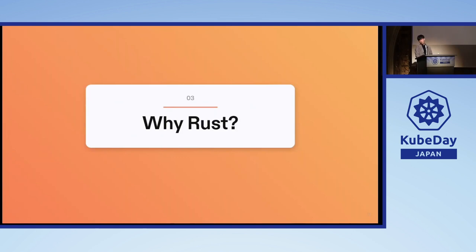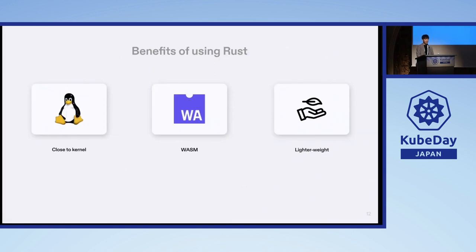Let's go into the reasons for implementing Yoki in Rust. I would like to talk about three advantages in detail. First, the most straightforward is a good match with the Linux kernel. More precisely, it needs to manipulate processes in detail. As Rust has been adopted as the second language of the Linux kernel, it has less difficulty using kernel features. It will not be difficult to handle system calls in the future. Next is Wasm support. Recently there has been a lot of talk about Wasm, and Rust makes it easy to handle this area as well. The last one is performance.